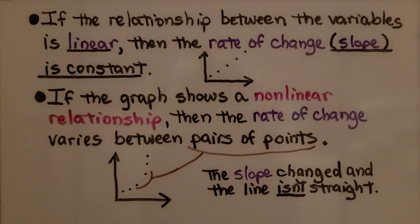If the graph shows a non-linear relationship, then the rate of change varies between the points, and we'll see a curve. The slope changed, and the line isn't straight.